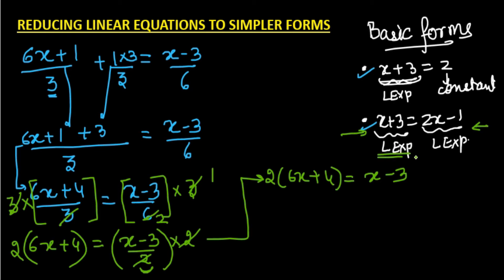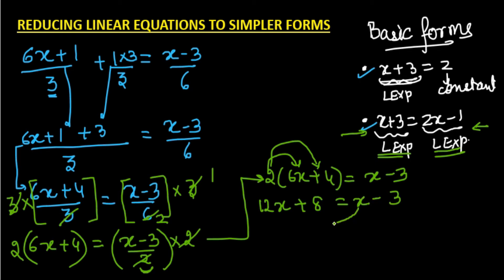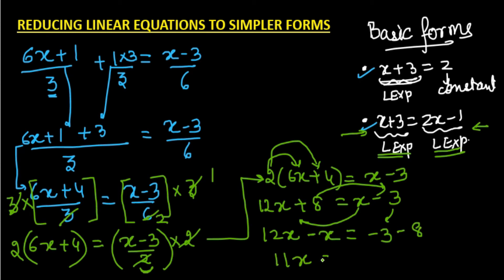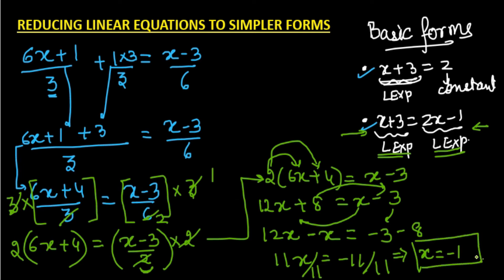We distribute 2 to both terms in the bracket: 2 × 6x = 12x and 2 × 4 = 8, so 12x + 8 = x − 3. Bringing like terms together — transposing x to the left gives −x, and transposing 8 to the right gives −8 — we get 11x = −11. Dividing both sides by 11 gives x = −1.